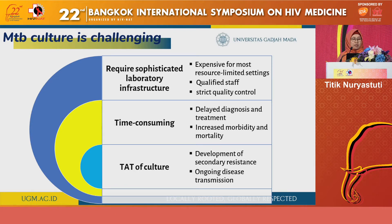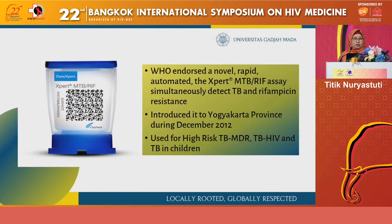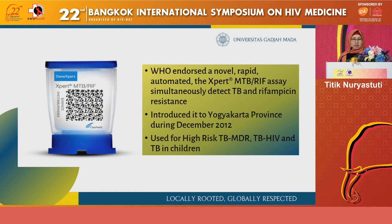We should keep in mind that MTB culture is very challenging because it requires sophisticated laboratory infrastructure. This method is time-consuming, needs qualified staff and strict quality control. The delay in diagnosis and treatment increases morbidity and mortality, and delay in culture results leads to development of secondary resistance and ongoing disease transmission. In 2010, WHO endorsed a novel rapid automated tool called GeneXpert MTB/RIF, which can simultaneously detect TB and rifampicin resistance in only two hours. In our province, it was introduced in December 2012 and is used to detect TB infection in high-risk groups including MDR-TB, TB-HIV, and pediatric TB.